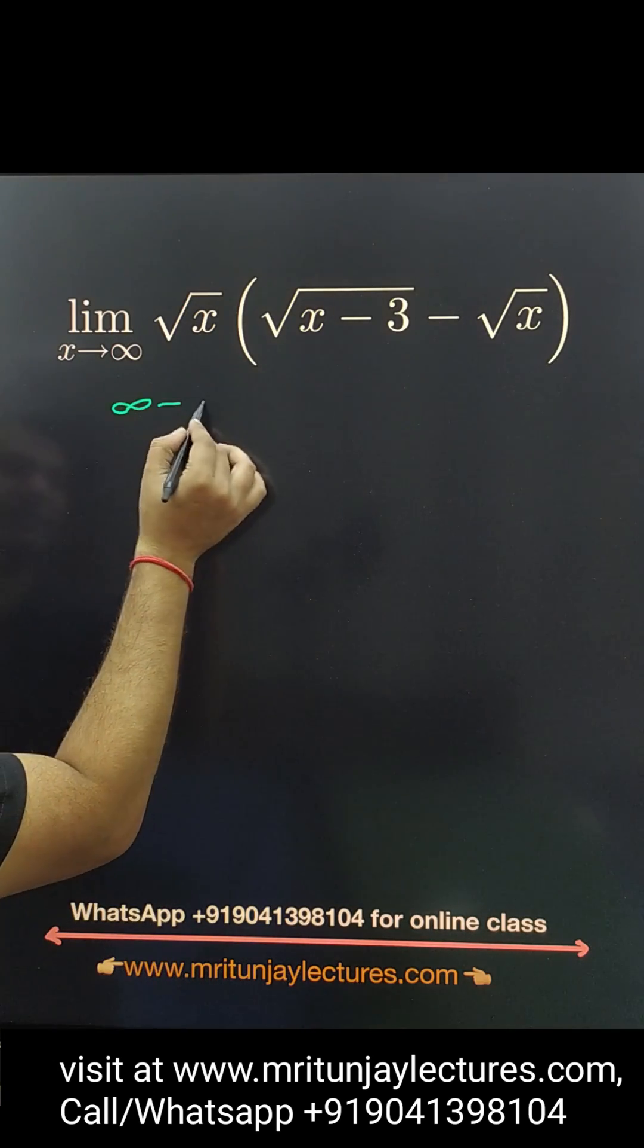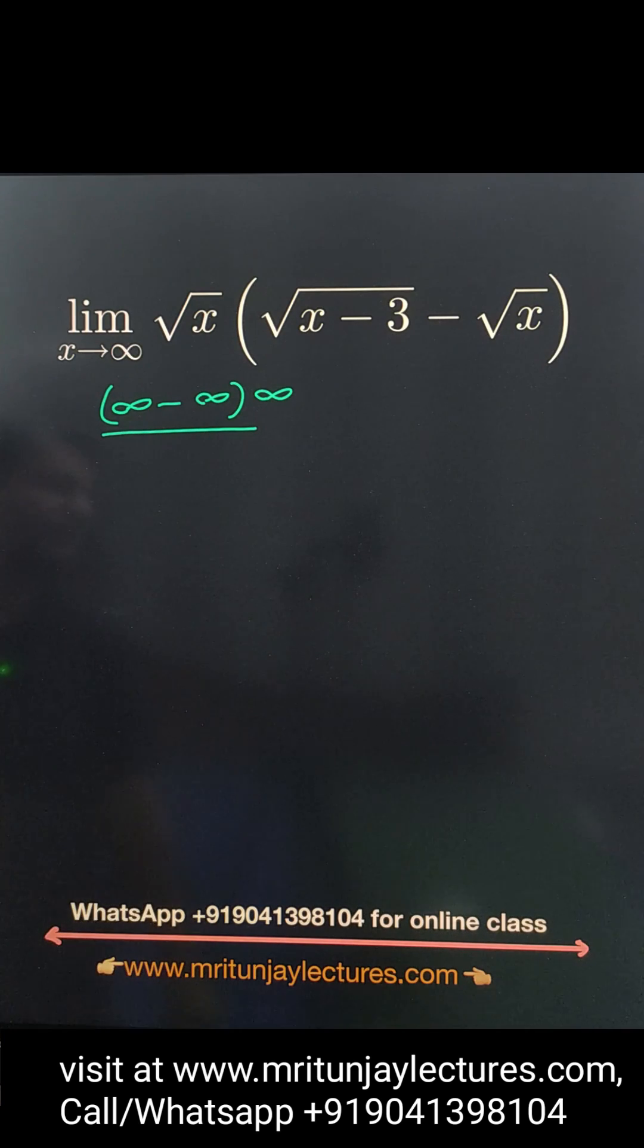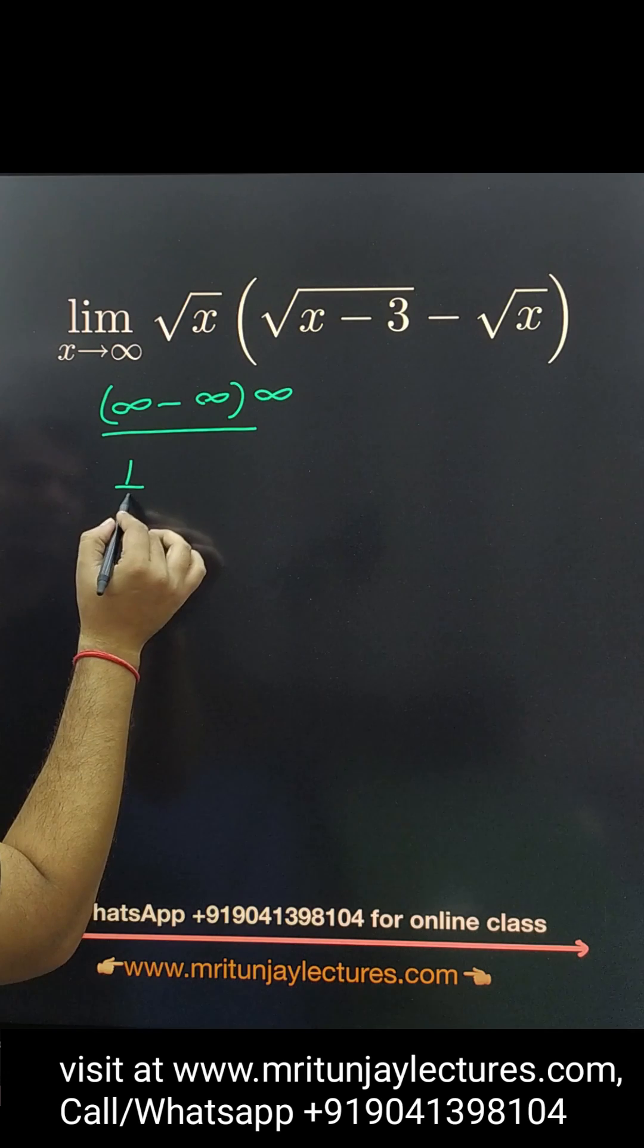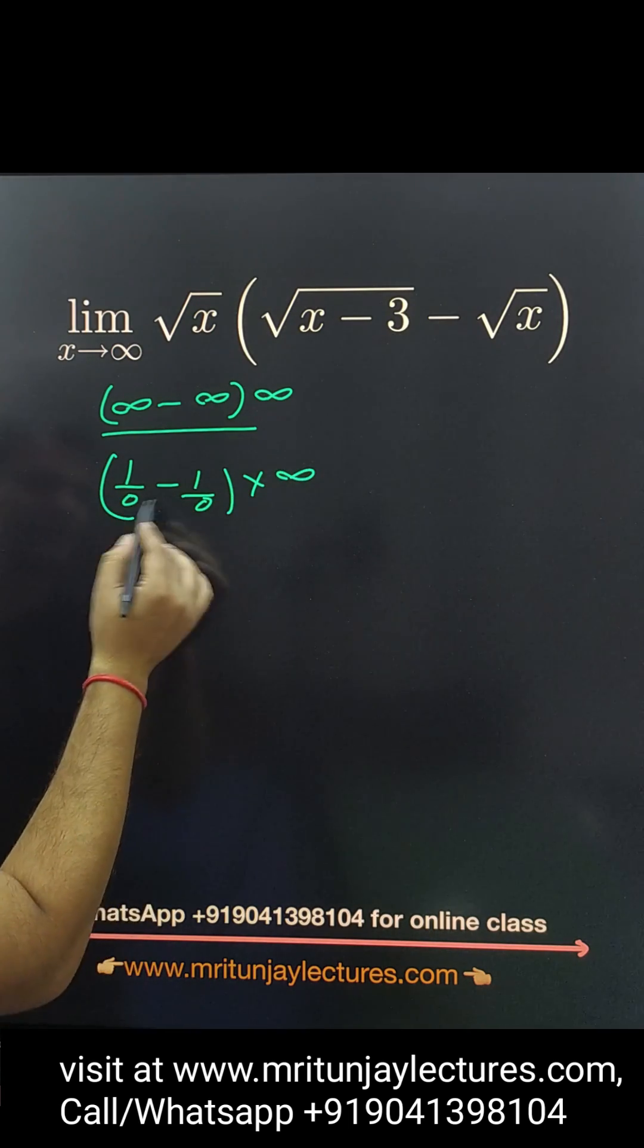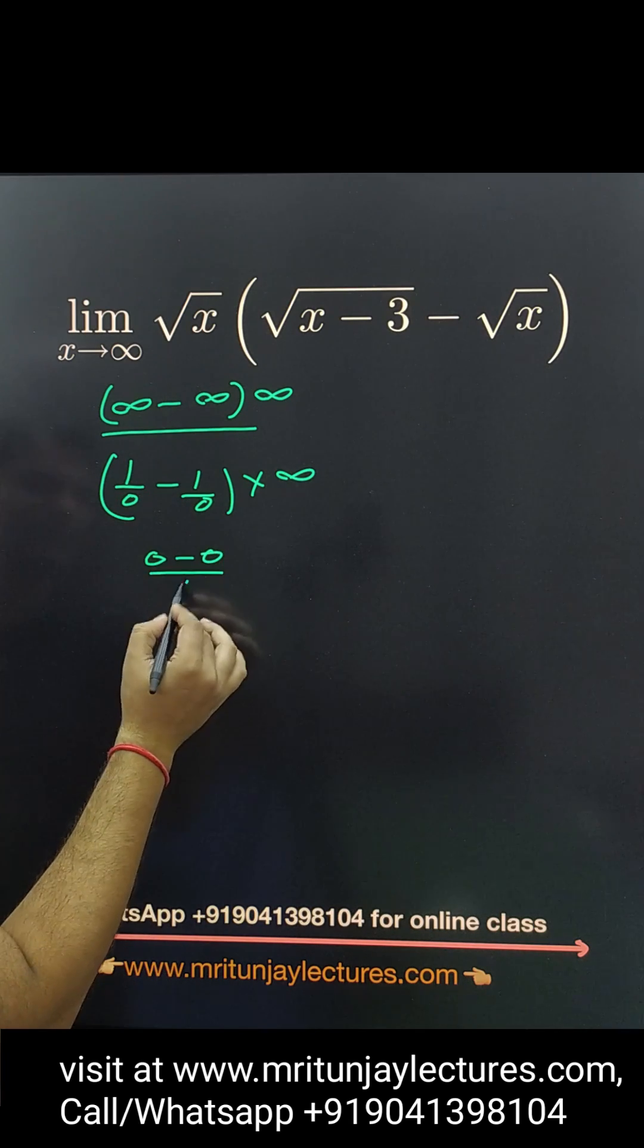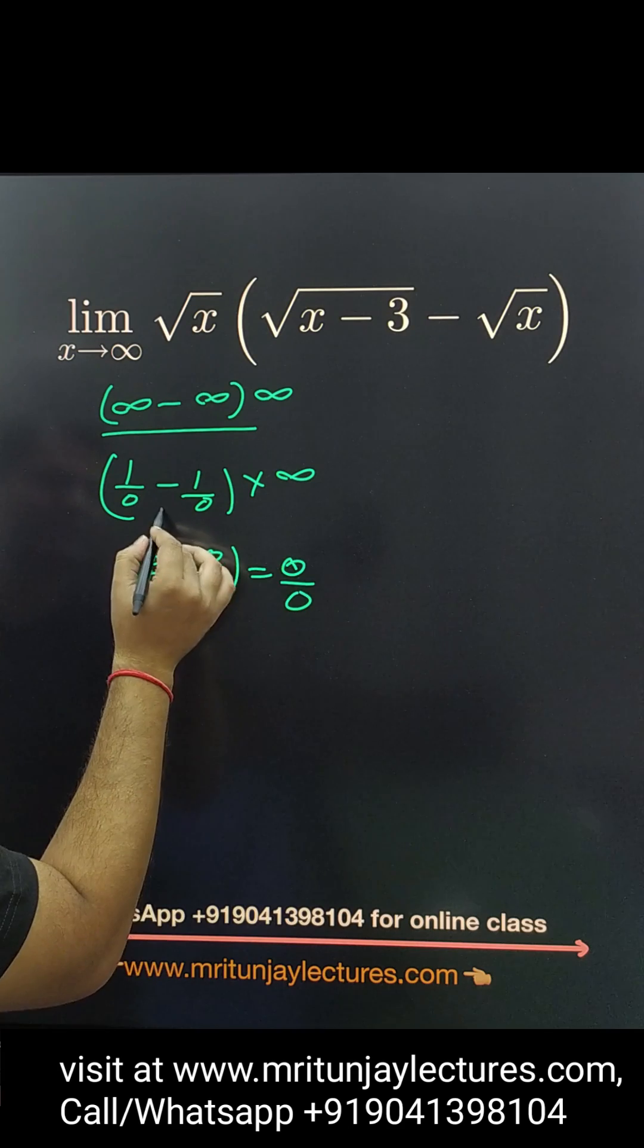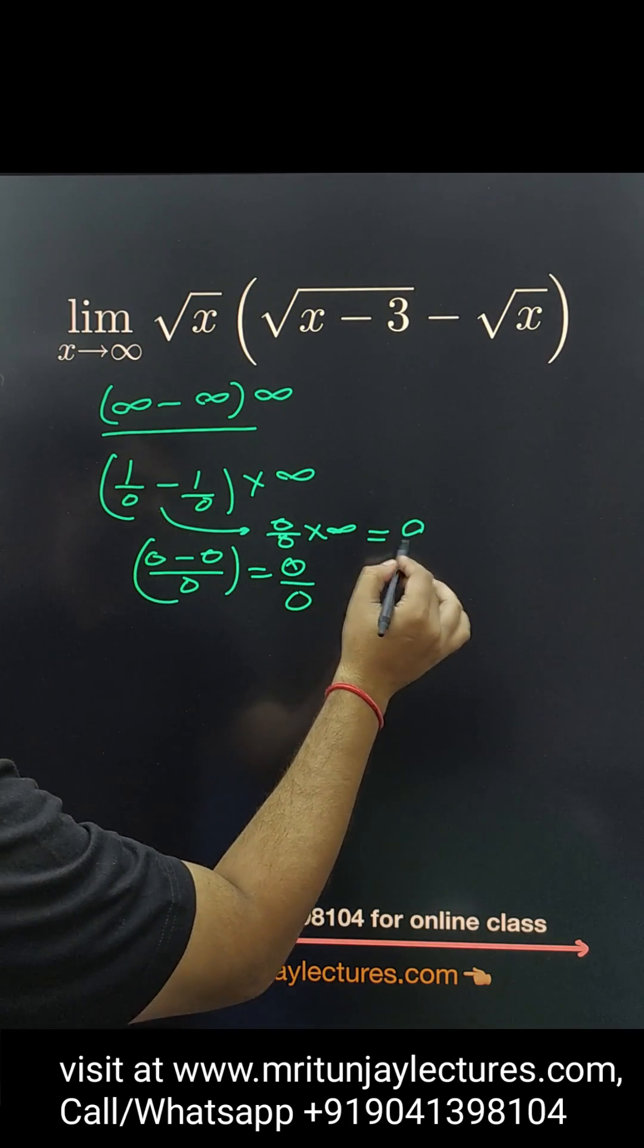I know that if you put here infinity minus infinity times infinity, that one is indeterminate. Why is this indeterminate? Because 1 by 0, here 1 by 0, whatever be the value here. So 0 minus 0 divided by 0. So you can say 0 by 0. So basically that one is 0 by 0 and whatever that value.